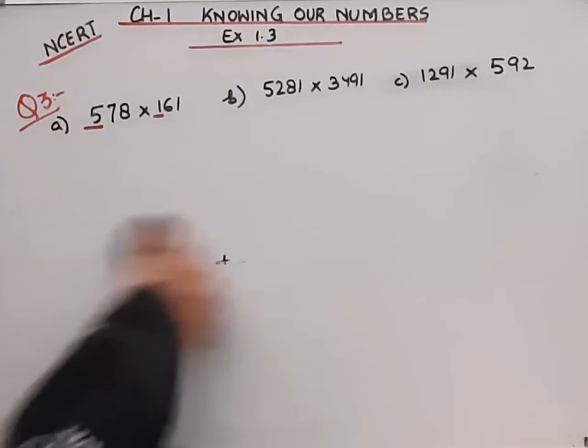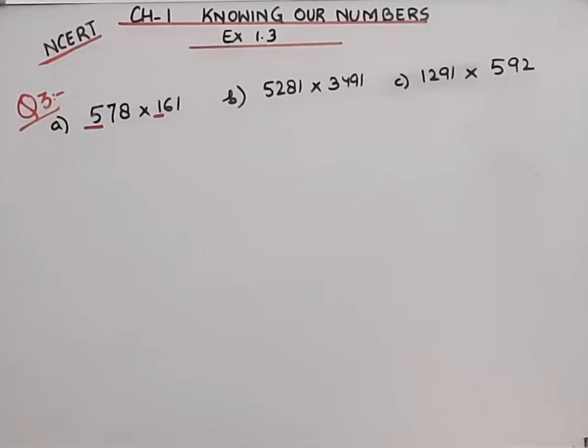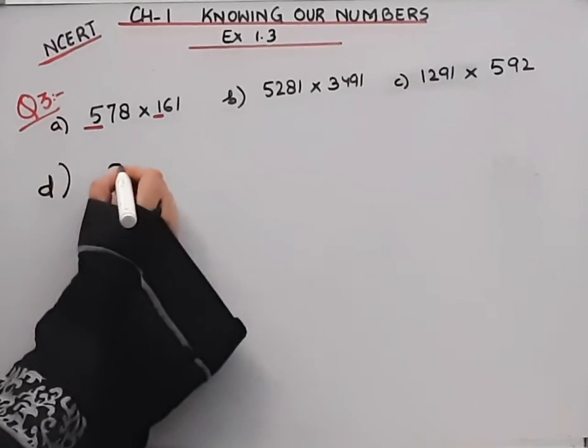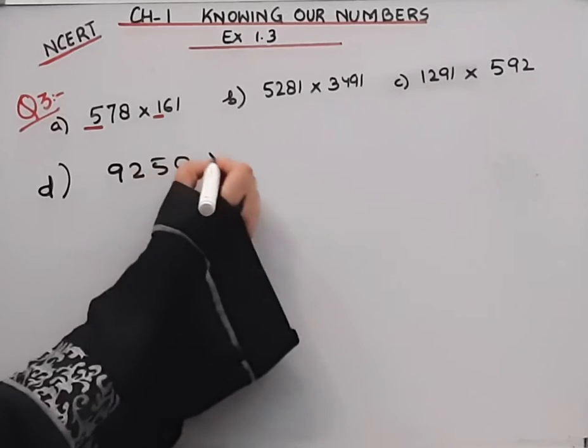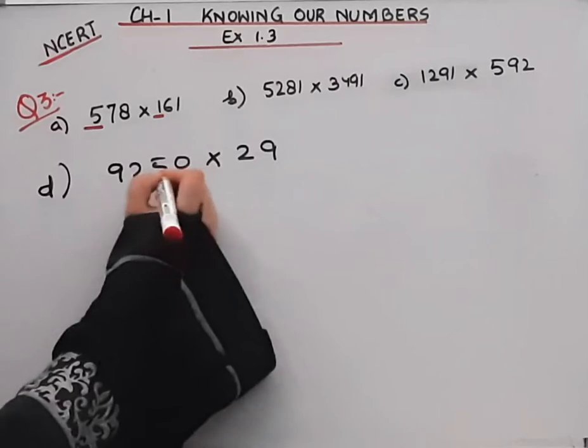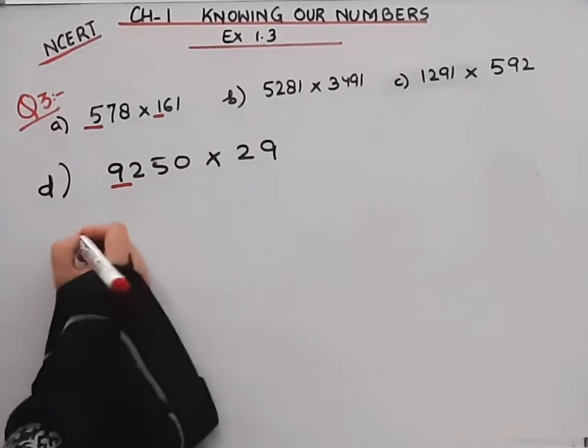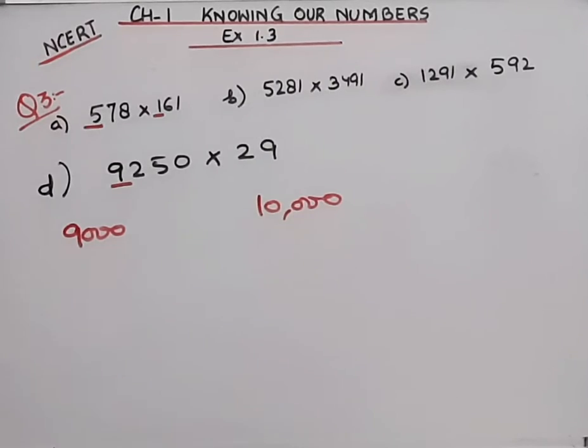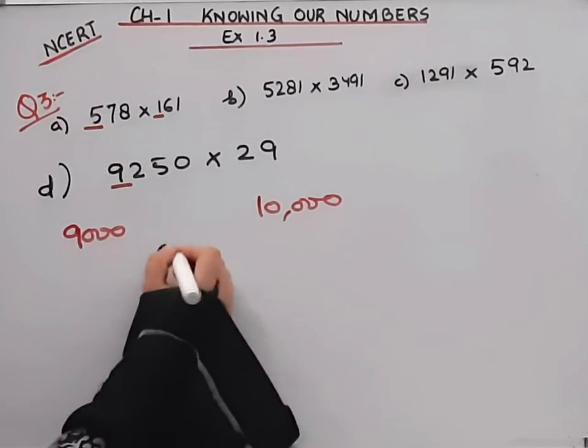Now moving to the D part. D part is 9250 times 29. The last place is the thousands. 9250 is close to 9000 or 10,000.